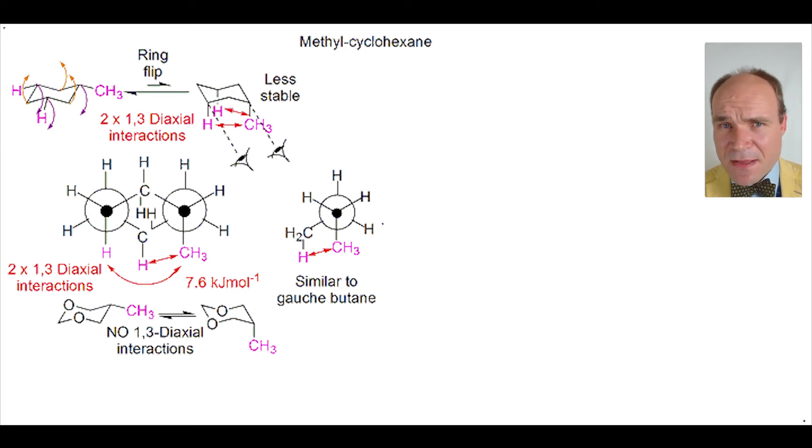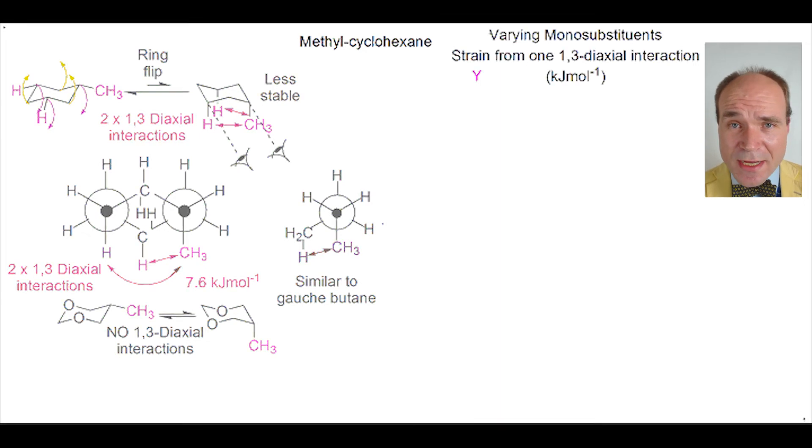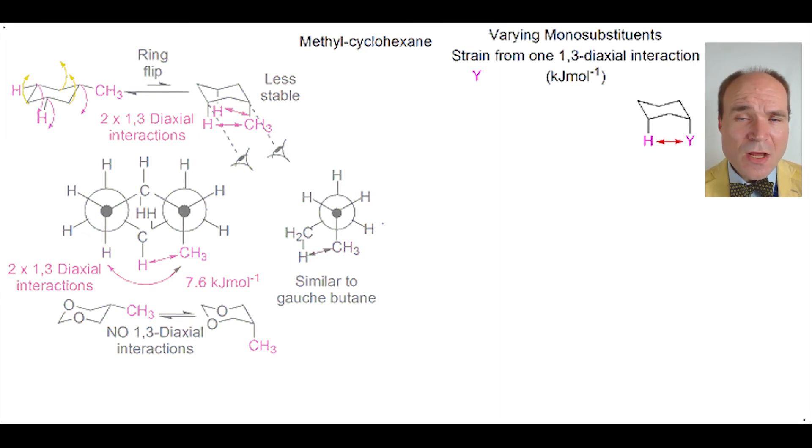So that's a methyl group. Naturally, we can have a variety of substituents and see a similar effect. Where the substituents are small, the 1,3-diaxial interaction creates less energy.